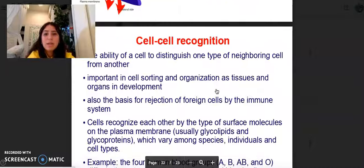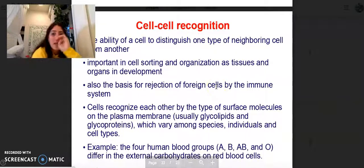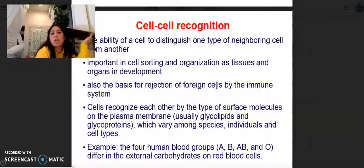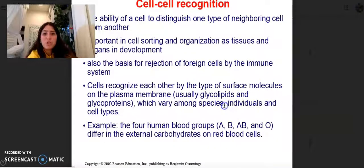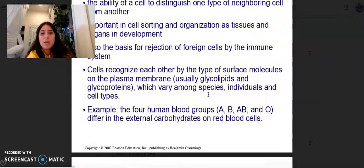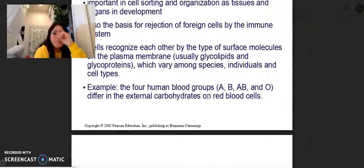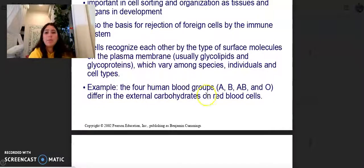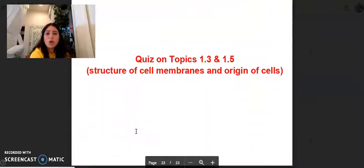Cell-to-cell recognition, the ability of a cell to distinguish one type of neighboring cell from another, is important in cell sorting and organization as tissues and organs in development, and also the basis for rejection of foreign cells by the immune system. Cells recognize each other by the surface molecules in the plasma membrane, usually glycolipids and glycoproteins, which vary among species, individuals, and cell types. For example, the four human blood groups A, B, AB, and O differ in external carbohydrates on red blood cells.